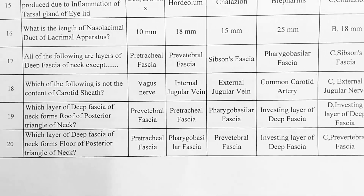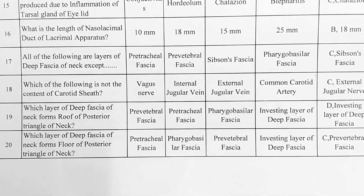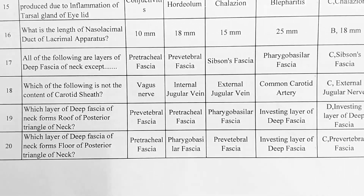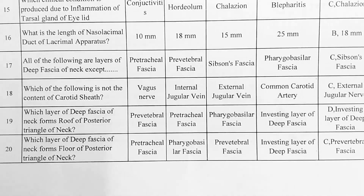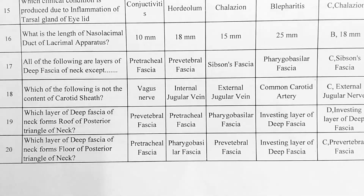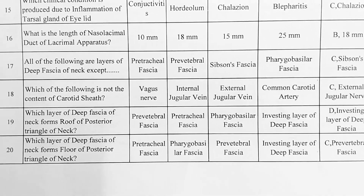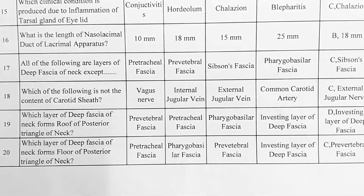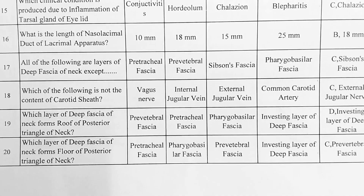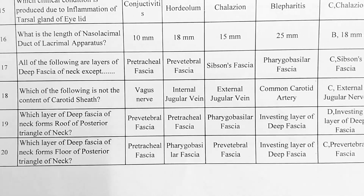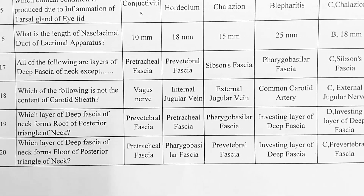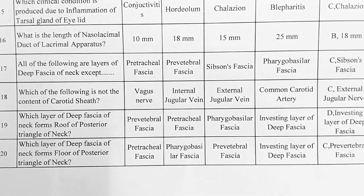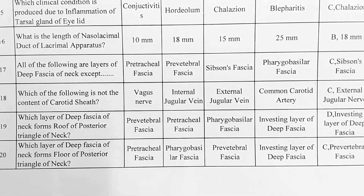Next. Which of the following is not a content of the carotid sheath? Options — A: vagus nerve, B: internal jugular vein, C: external jugular vein, D: common carotid artery. Option C is correct, external jugular vein.